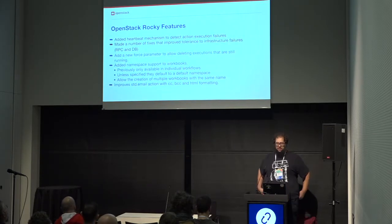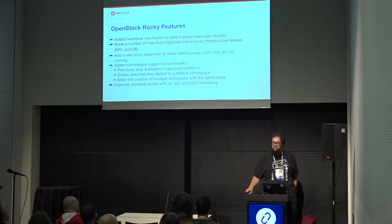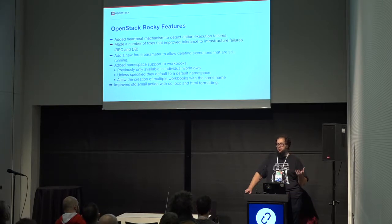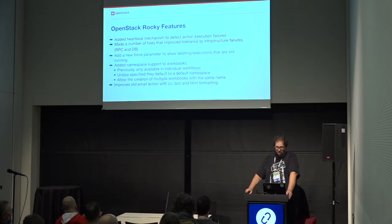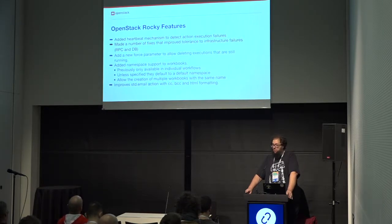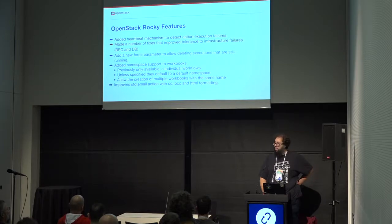We have a new heartbeat mechanism that detects when an action fails. In Rocky it's still based on a scheduler, but that changes in Stein. It allows us to know when a task has failed without having to wait as long — we can get it and report it faster. There were also a huge number of fault tolerance and infrastructure failure improvements, with a lot landing in Rocky and more bug fixes already queued for Stein, allowing for a more robust service.